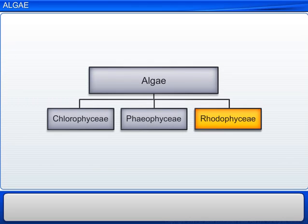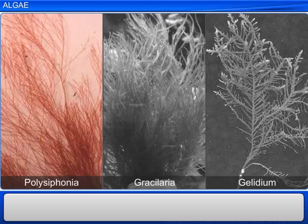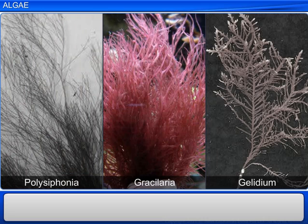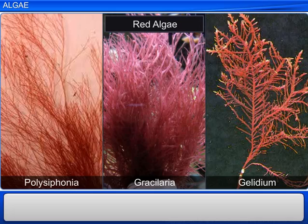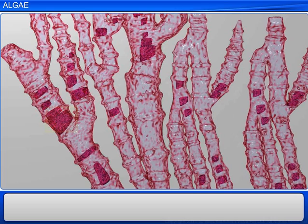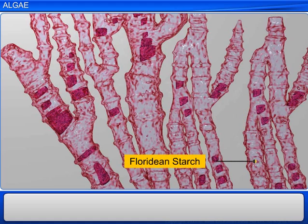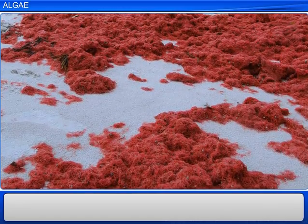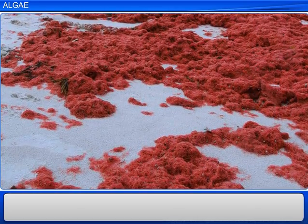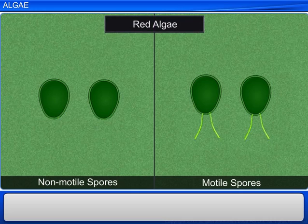Rhodophyceae is another class of algae whose members include Polysiphonia, Gracilaria, and Gelidium. The members are often called red algae. The red color is due to a high concentration of the red pigment R-phycoerythrin. The thalli of red algae are multicellular, and food is stored as Floridian starch inside the cells. Red algae are found in brackish and salt water, and mostly in warmer areas. Red algae reproduce vegetatively, asexually through non-motile spores, and sexually through motile spores.